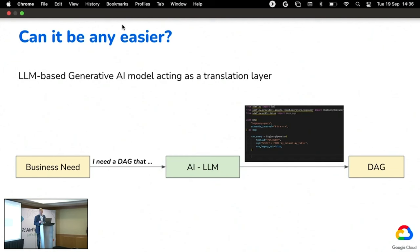So we asked ourselves: can it be any easier? What's happening is that a business need is being translated by an engineer into a piece of code — it's an act of translation. Generative AI, especially large language models, are very good at translation, and also very good at aggregating knowledge from many domains. So the hypothesis is that we can use machine learning models based on large language models to help in DAG development.